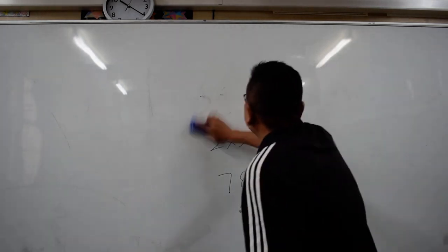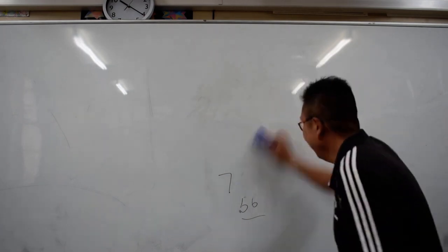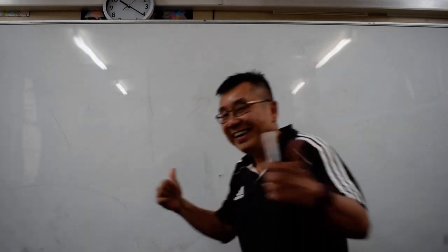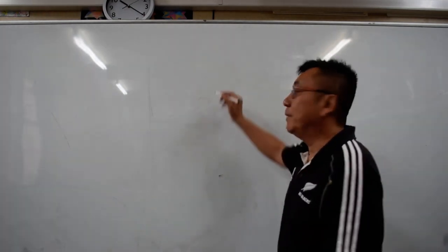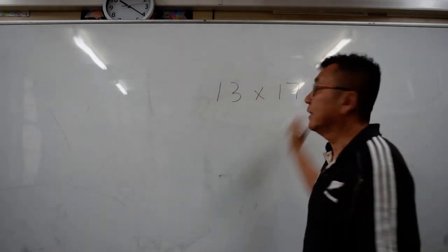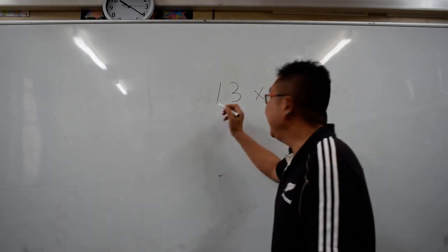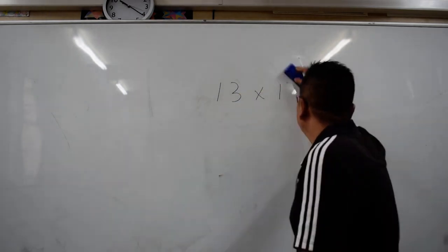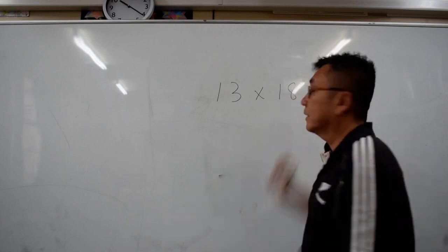So now we shall do 13 times 17. So now, this trick is that... maybe not 17, maybe we do 18. So the first number is the same.